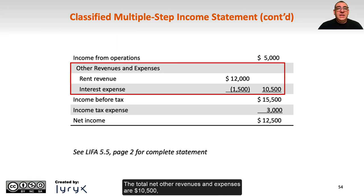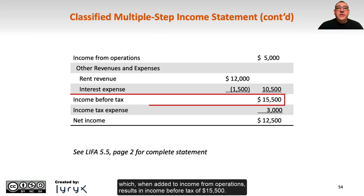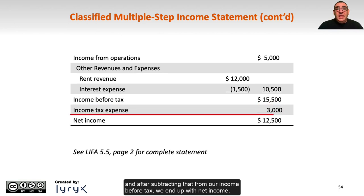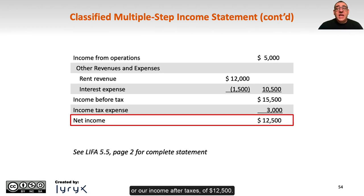The total net other revenues and expenses are $10,500, which, when added to income from operations, results in income before tax of $15,500. Then we calculate income tax expense — in this case $3,000 — and after subtracting that, we end up with net income of $12,500.